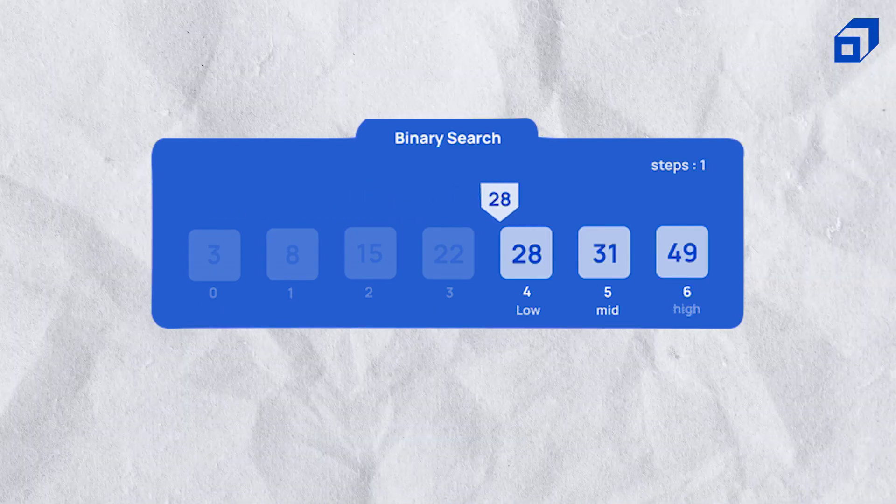The third important topic is search algorithms, primarily binary search. Binary search is not just a standalone problem — it forms an important basis for many larger problems, so try to identify where you can use it to optimize your solutions. Remember, binary search can only be applied on sorted search spaces. Sometimes the sorted structure is explicit; other times it is implicit, as in problems like book allocation and the painter's problem.